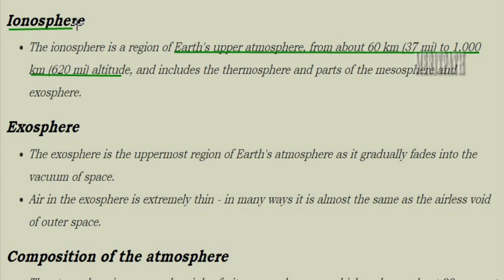Next is the ionosphere. The ionosphere is a region above the earth's atmosphere at a height of 60 to 1000 kilometers altitude. It includes the thermosphere and parts of the mesosphere and exosphere. The temperature is always colder in this region.